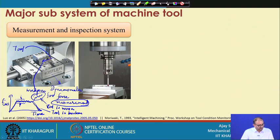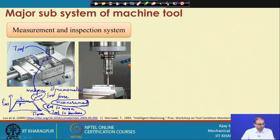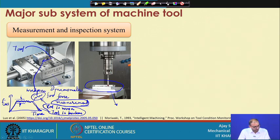These are some of the interpretations by which you can understand what is happening inside the machine. In-process measurement by means of dynamometer, acoustic emission sensor, or accelerometer is very important to get real-time information because you do not have direct access to the machining zone. Once machining is done, you do not want to remove the component, because the work coordinate system and tool coordinate system have been established. Repositioning the component exactly would require very precise fixtures, so it is better to keep the component in place.